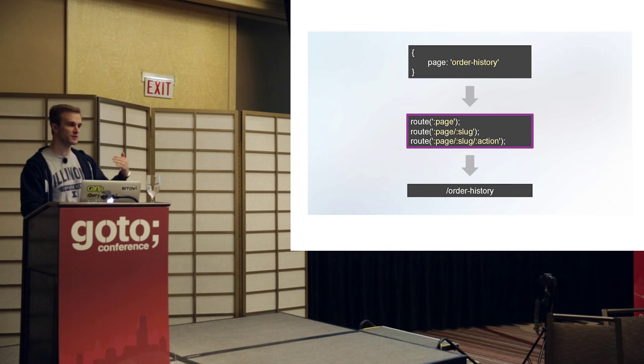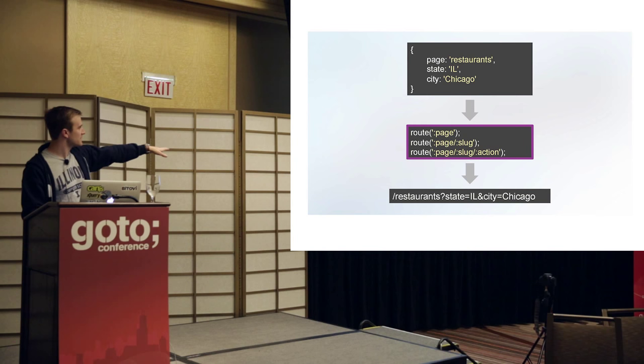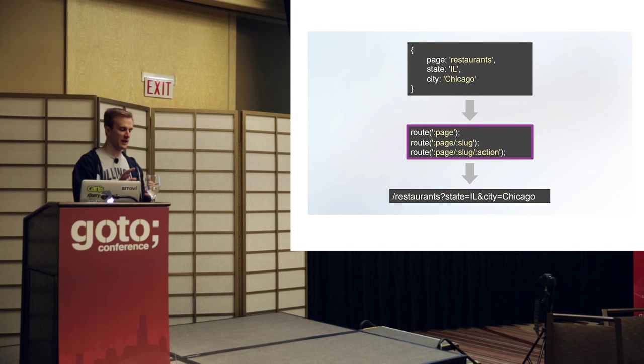Two-way routing allows you to go from the data back through the routes to get your eventual URL. If I had Page: Restaurant, State: Illinois, City: Chicago, it goes through these routes and I get a URL that looks like that. The real benefit of two-way routing is that you can write your application so that you can change the routes at any time and only have to change the routes — the rest of your application just keeps working.